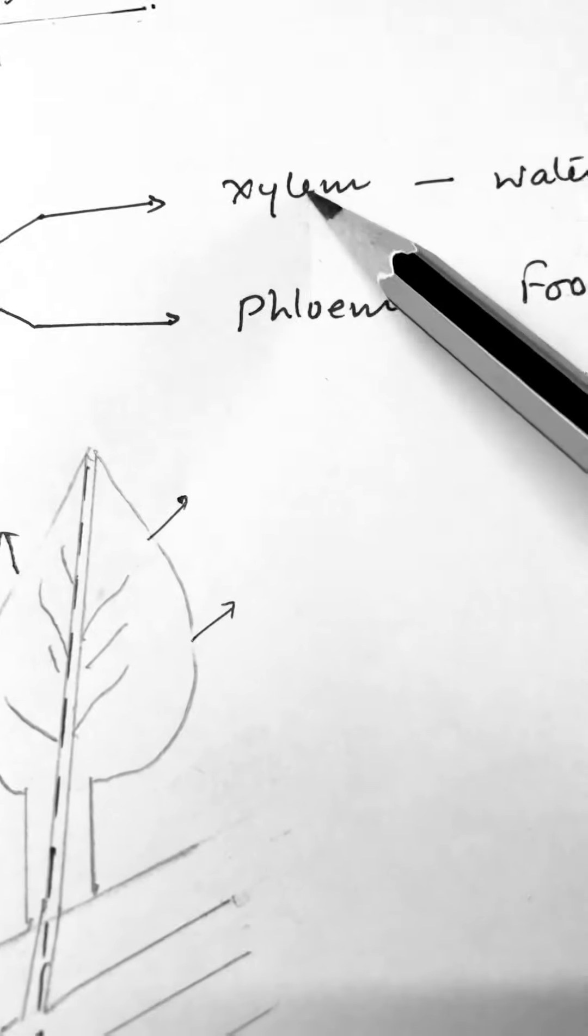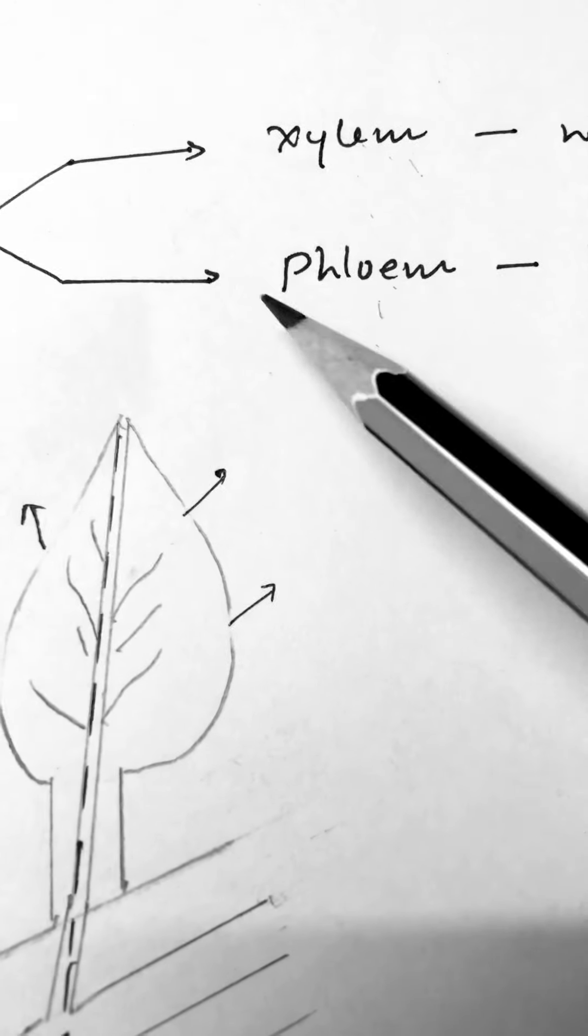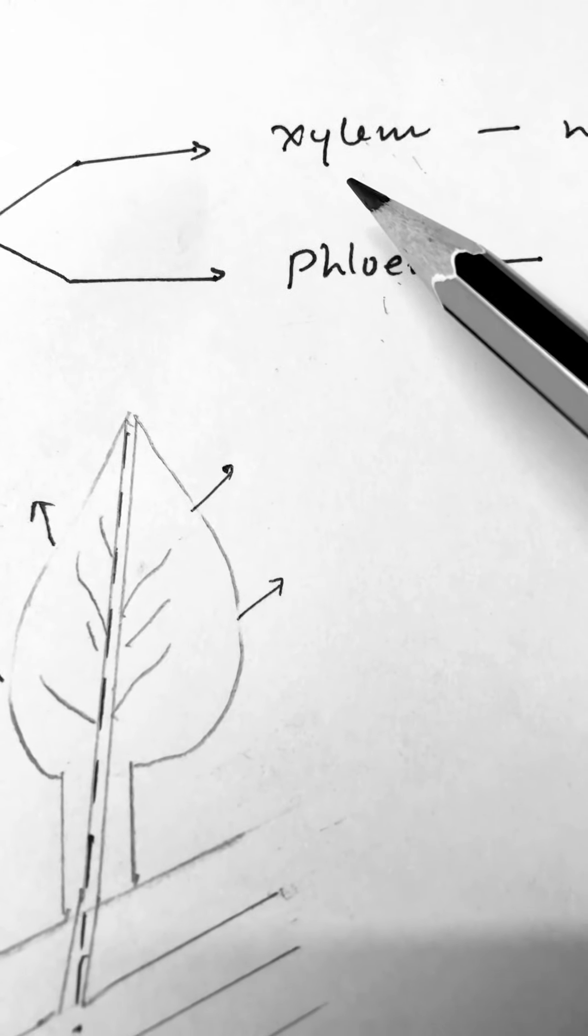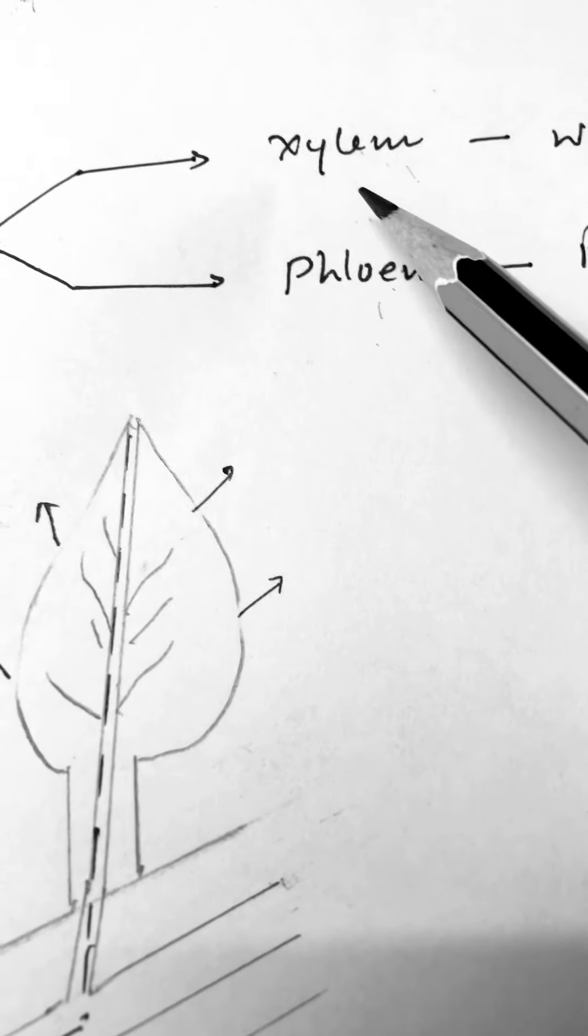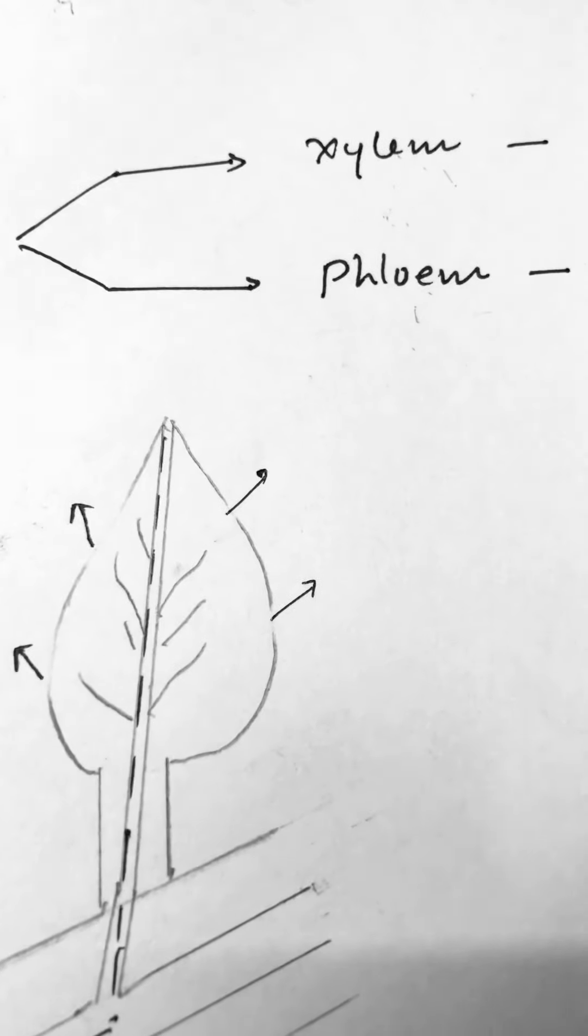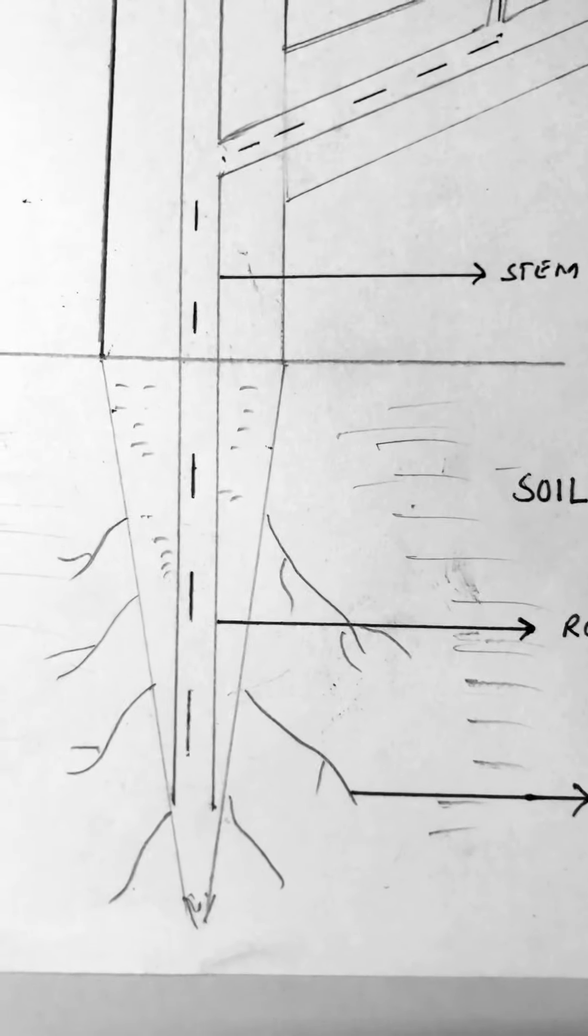The xylem and the phloem both are two concentric pipes with the outer pipe phloem and the inner one is xylem. Now, in order to understand transportation of water and minerals through xylem, let's consider the plant. As you can see in the diagram...